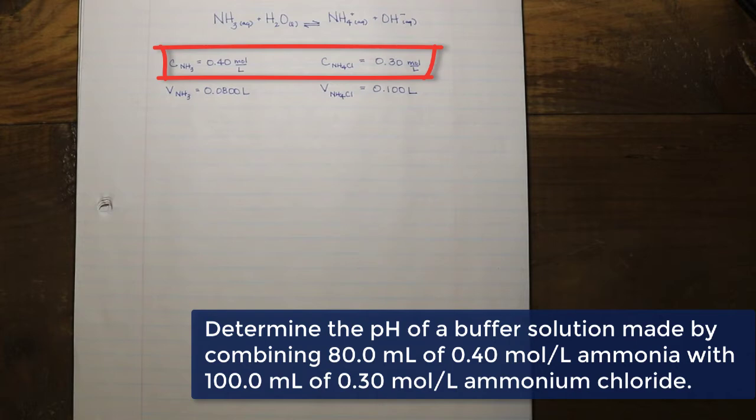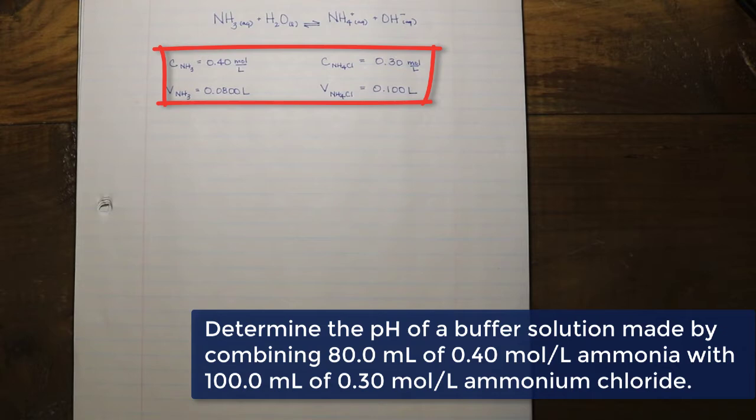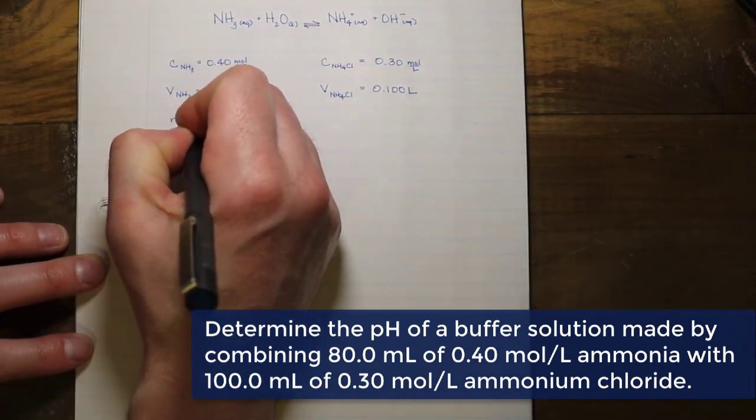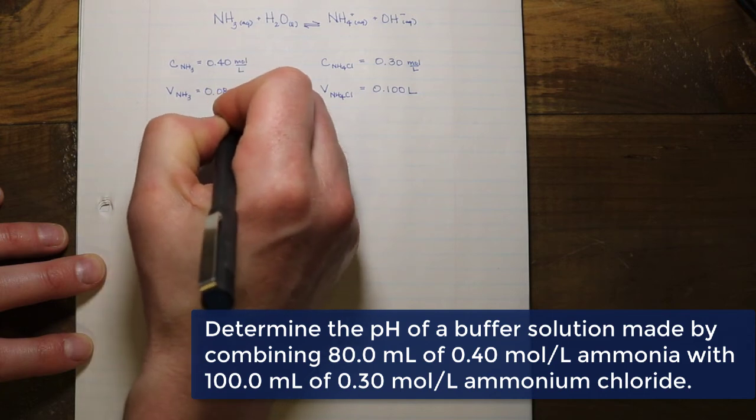We have the concentration and volume of both the ammonia and ammonium chloride. So since we have the concentration and volume, what we can do is calculate the number of moles of the ammonium. That's just our standard concentration times volume calculation.